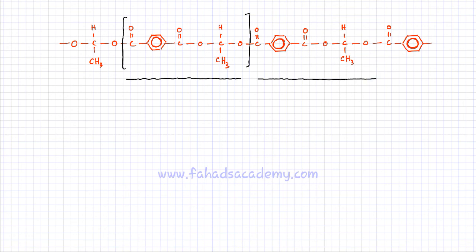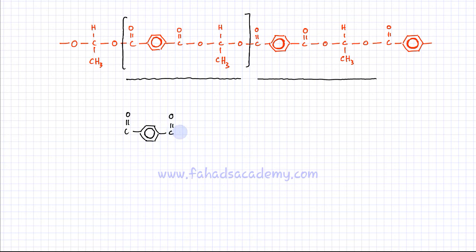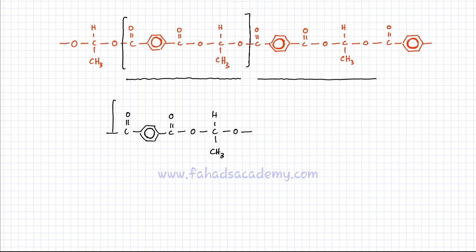If you are asked to draw or represent this polymer, you can use the repeat unit. Take this repeat unit: C double bond O followed by a benzene ring — remember benzene is an organic structure studied later in advanced level. Then there is another O, then C with a hydrogen, a methyl attached to the C, and then another O. Draw the continuation bonds on both sides, showing the repeat unit continues, then put square or curly brackets and write N, where N is the number of times this repeat unit repeats itself.